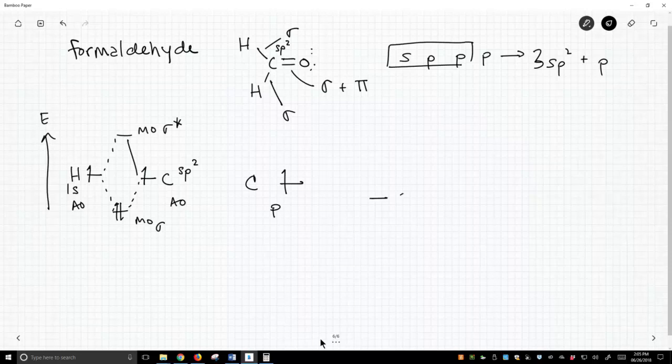Oxygen's orbital I'm going to draw a little bit lower. It also has a p orbital. These two p orbitals can overlap to make a pi bond. P orbitals make pi bonds - there's no coincidence that the letter p is involved in both.